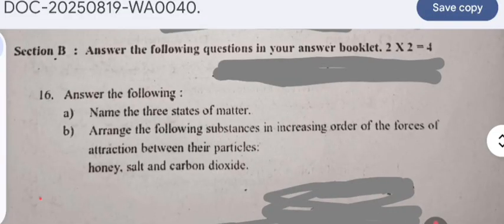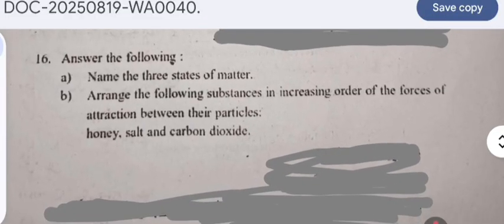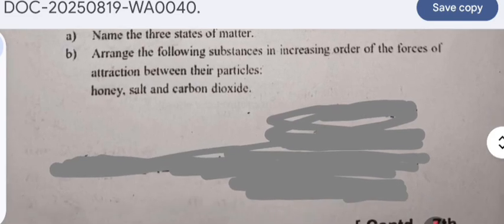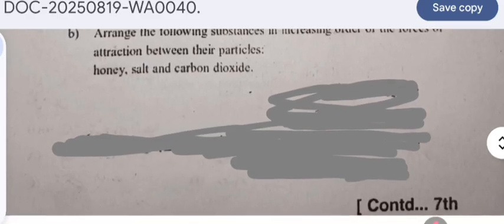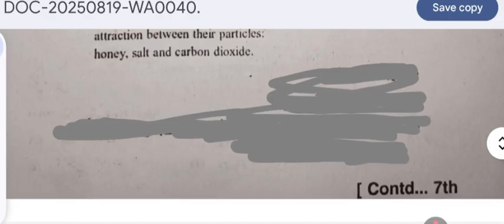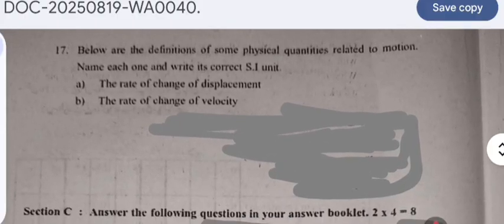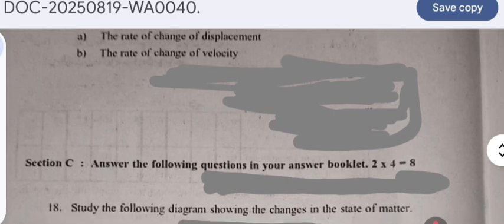Section B, question 16: Name the three states of matter. The three states of matter are solids, liquids, and gases. Arrange the following substances in increasing order of forces of attraction between their particles: carbon dioxide, honey, and salt. Question 17: Below are definitions of some physical quantities related to motion. Name each one and write its correct SI unit. The rate of change of displacement is called velocity, and the rate of change of velocity is called acceleration. For velocity, the SI unit is meter per second. For acceleration, the SI unit is meters per second squared.